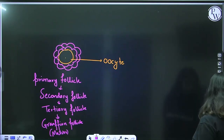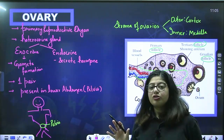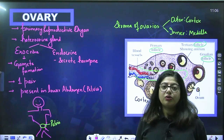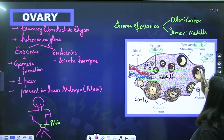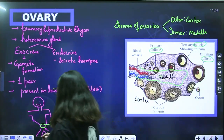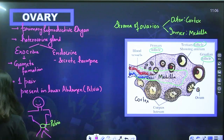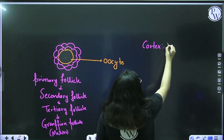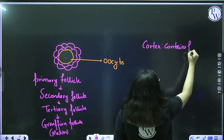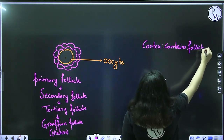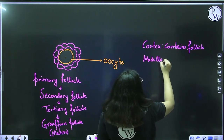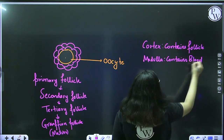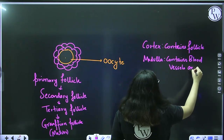The key point is that the stroma of the ovary is divided into two regions: the outer cortex contains follicles, and the inner medulla contains blood vessels and nerves.